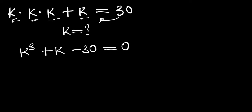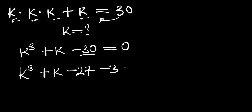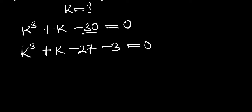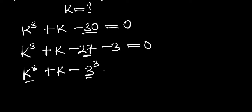So this becomes a cubic equation and we have to solve it. We have k³ + k, and instead of negative 30 we can write negative 27 minus 3, which equals zero. We can rewrite 27 as 3 to the power of 3, so it corresponds with the k³ term. Then we have minus 3, and this equals zero.